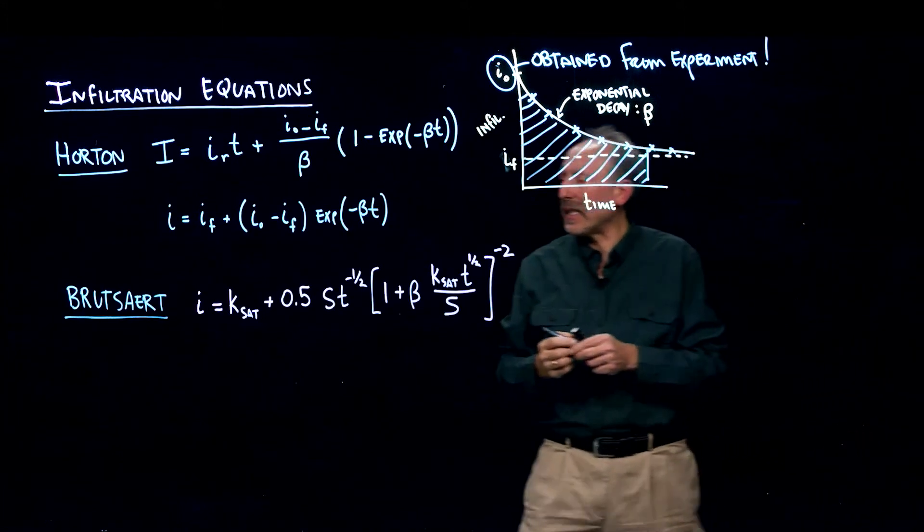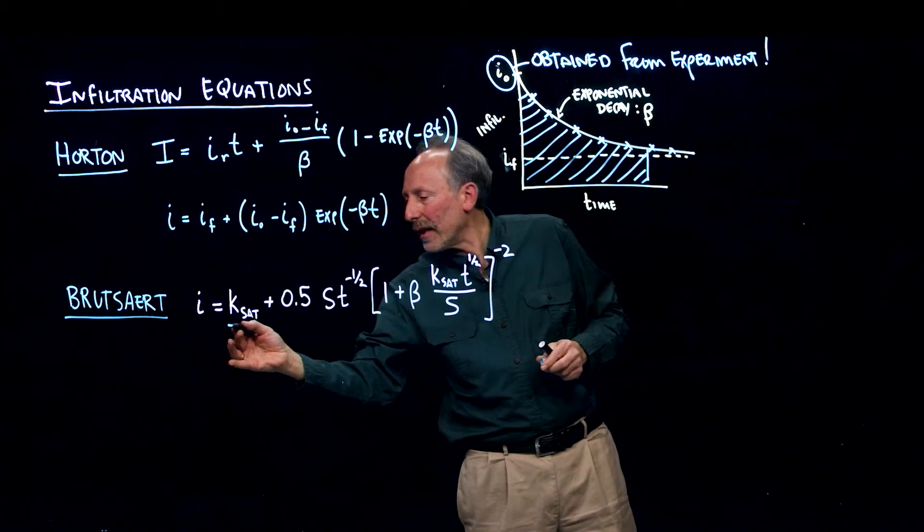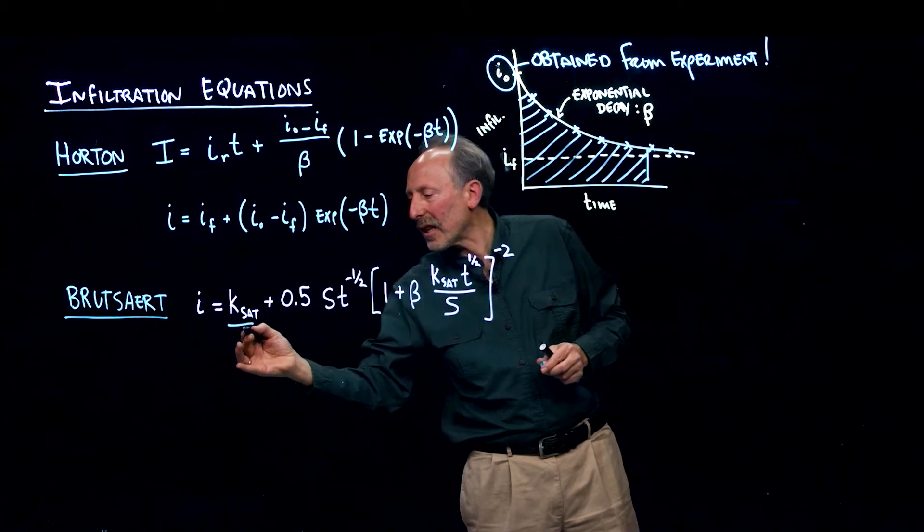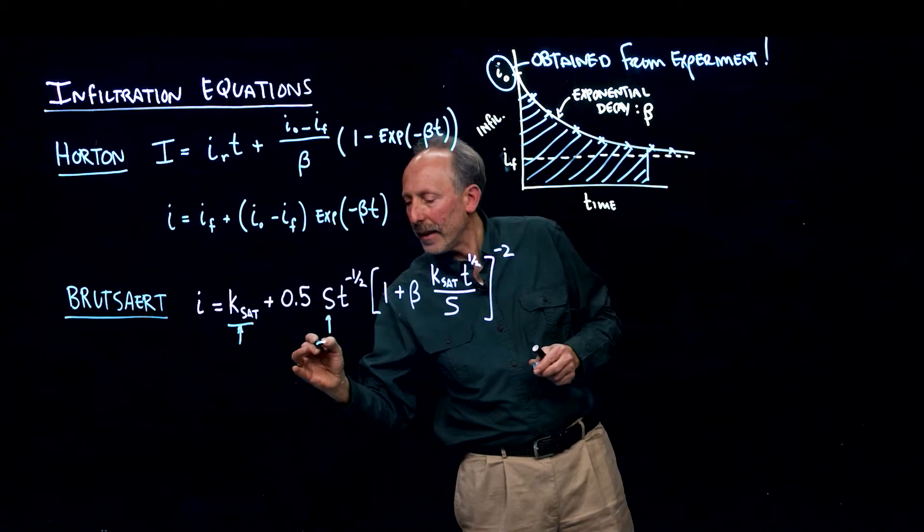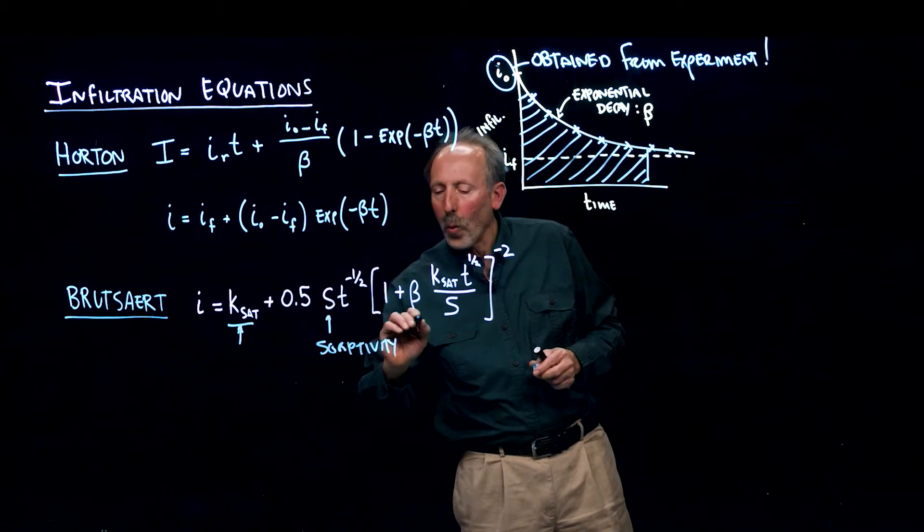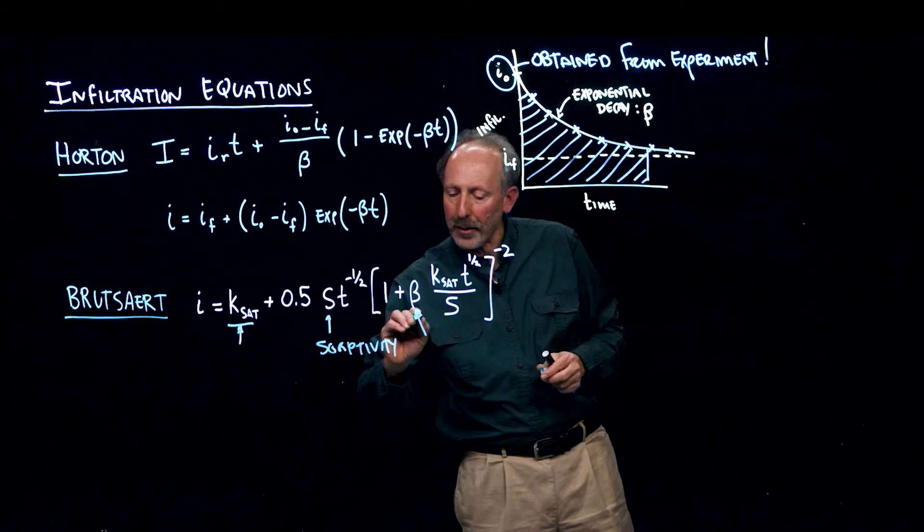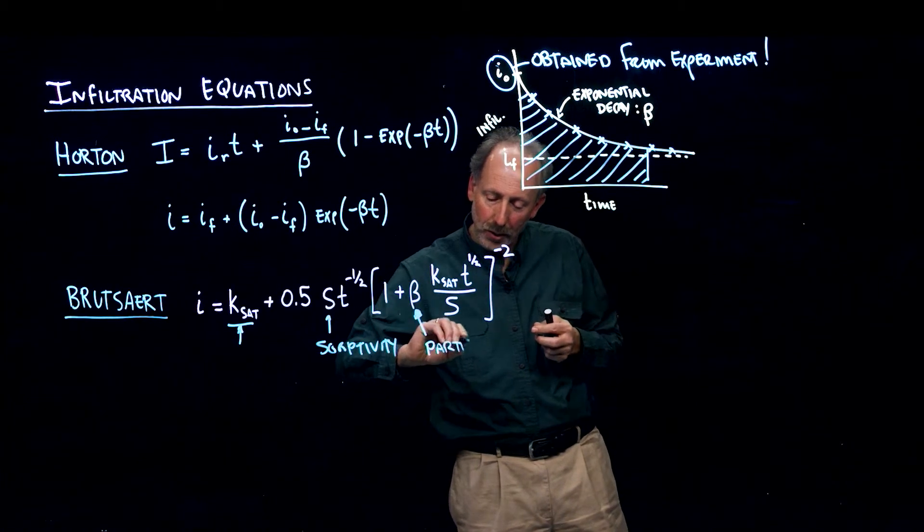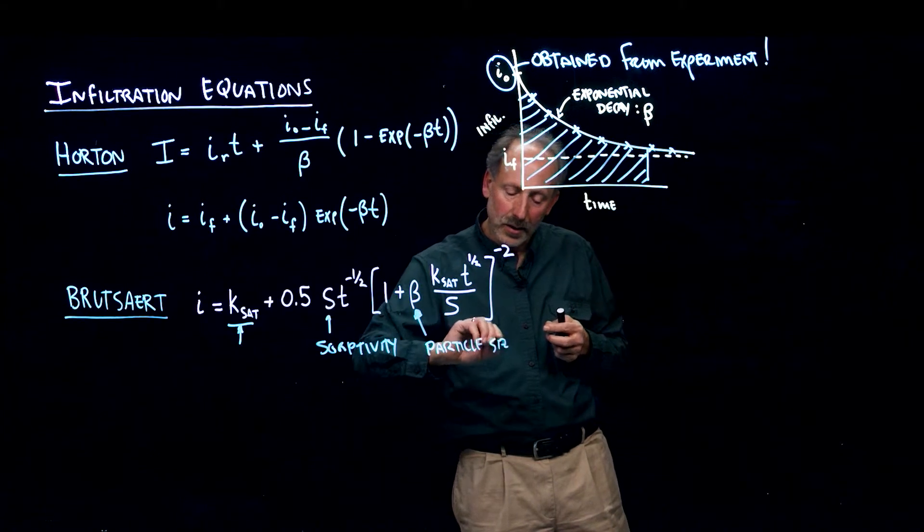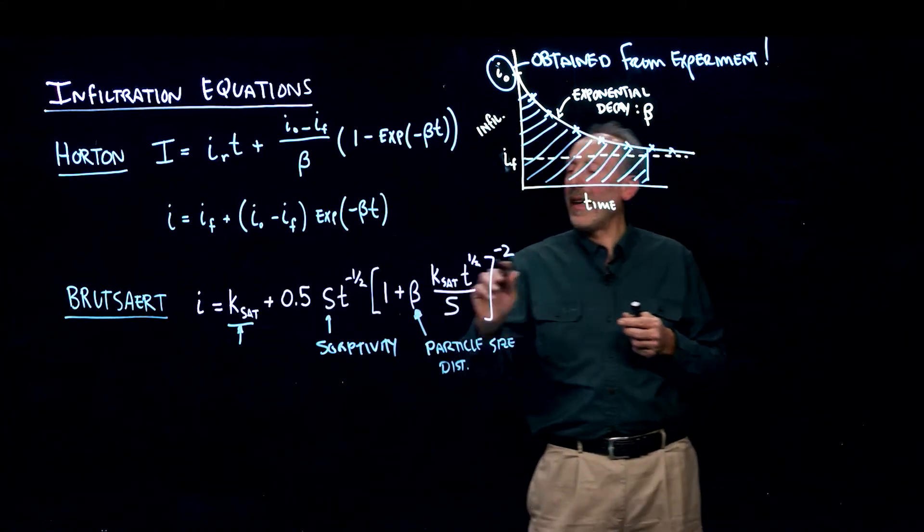On the other hand, here what we see is that Brutzard is using only things such as the saturated conductivity, the sorptivity, one soil parameter. So this is the particle size distribution, or it's related to the particle size distribution, and then time.